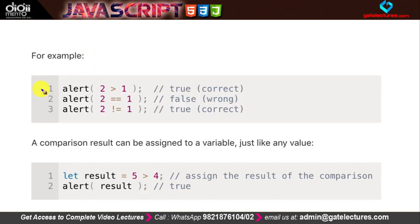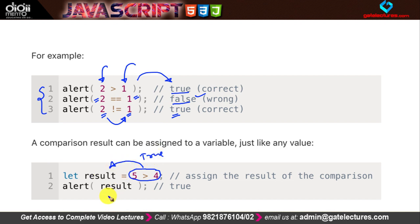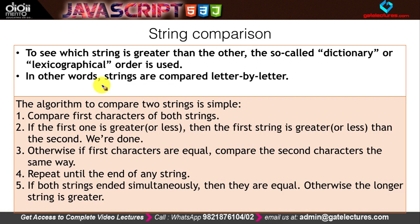Here is a basic example using integer values. Alert(2 > 1) returns true. Alert(2 == 1) returns false because we are comparing their values. Alert(2 != 1) returns true because 2 is not equal to 1. We can also assign the result — for example, let result = 5 > 4; since 5 > 4 is true, result will hold true. Checking typeof result gives boolean.